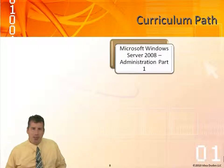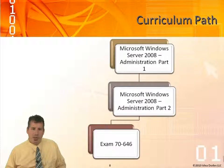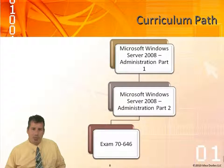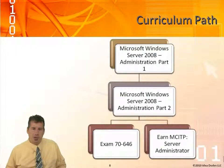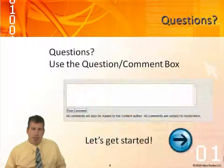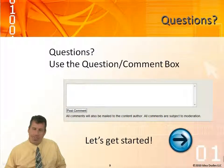Looking at the curriculum path: this is Microsoft Windows Server 2008 Administration Part 1 — you'll also have Part 2, and together they will get you ready for the 70-646. Remember, this is not a break-and-fix type course that teaches you how to implement; this course teaches you how to plan for the implementation of a Windows Server 2008 environment. This also gets you the MCITP Server Administrator along with passing the 70-640 and 70-642 exams. If you have questions or comments, you can put them in the GoGoBox at the bottom of the video. Let's get started.